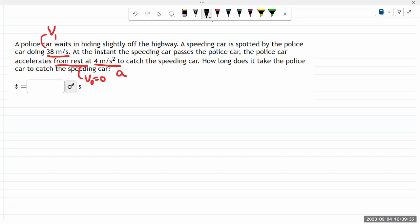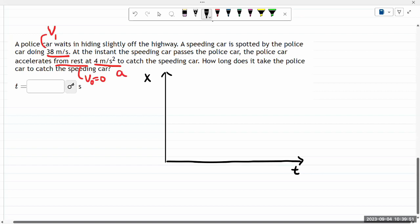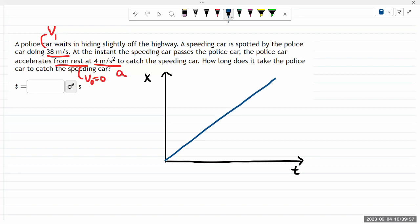So what I'm going to sketch is the positions of the car as a function of time. So the speeding car is pretty easy to draw. It's just going to be a straight line with the slope here being V1, the speed at which it's going.